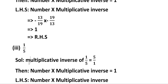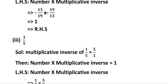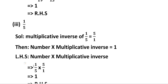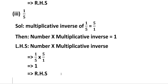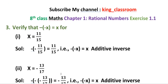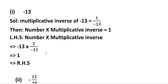Third one: 1 by 5. Multiplicative inverse of 1 by 5 is equal to 5 by 1. Then number into multiplicative inverse is equal to 1. LHS: substitute the values — 1 by 5 into 5 by 1. 1 cancels, 5 cancels. So 1 is the result, equal to RHS. Thank you.